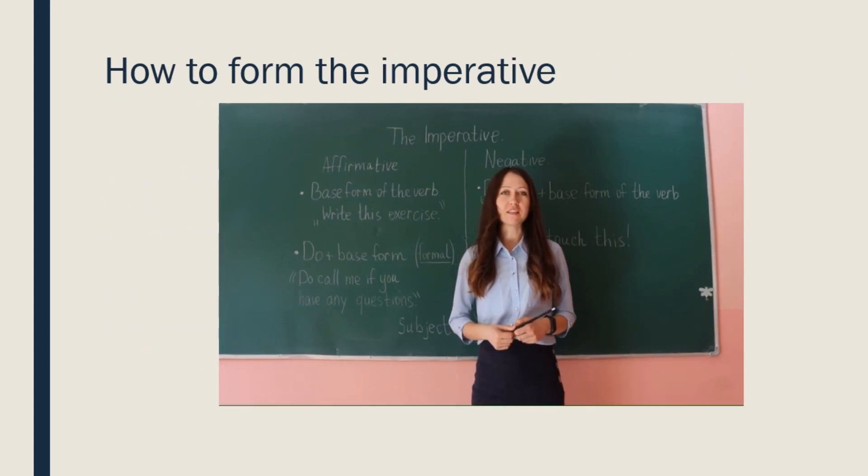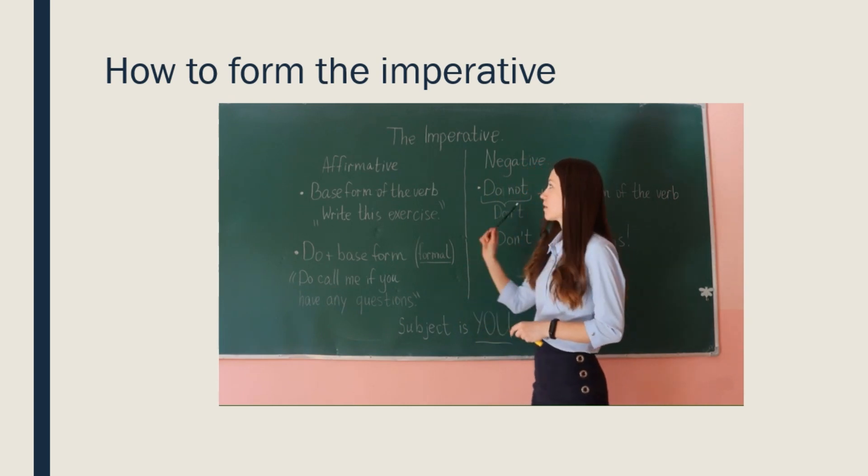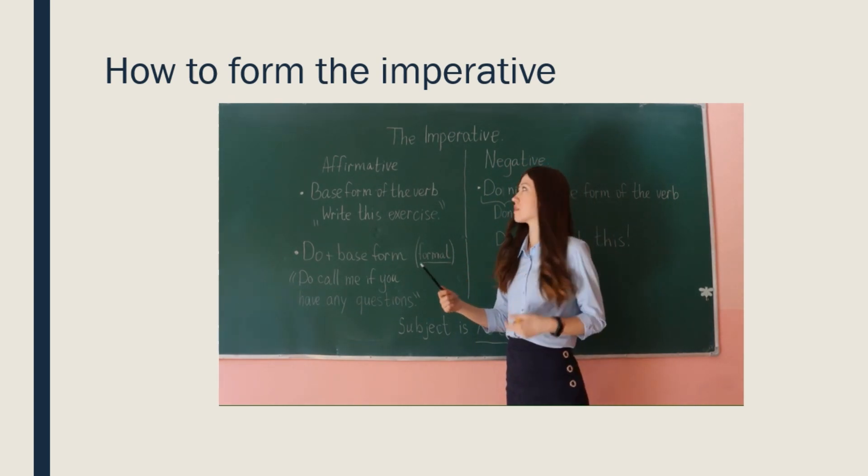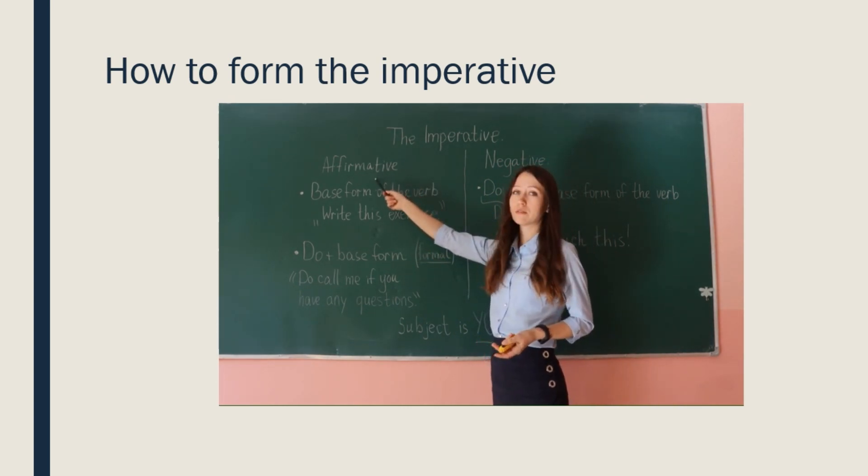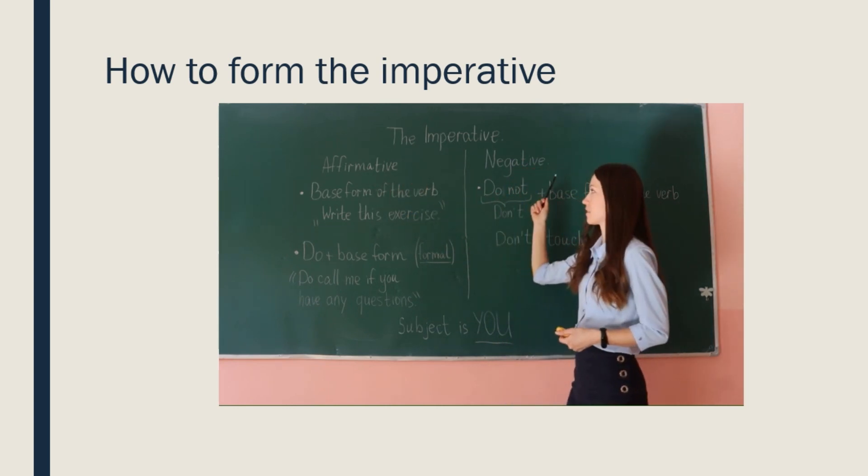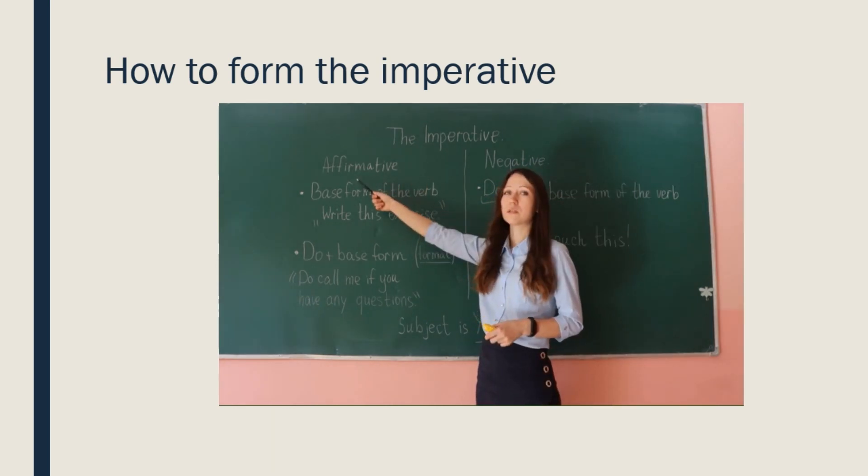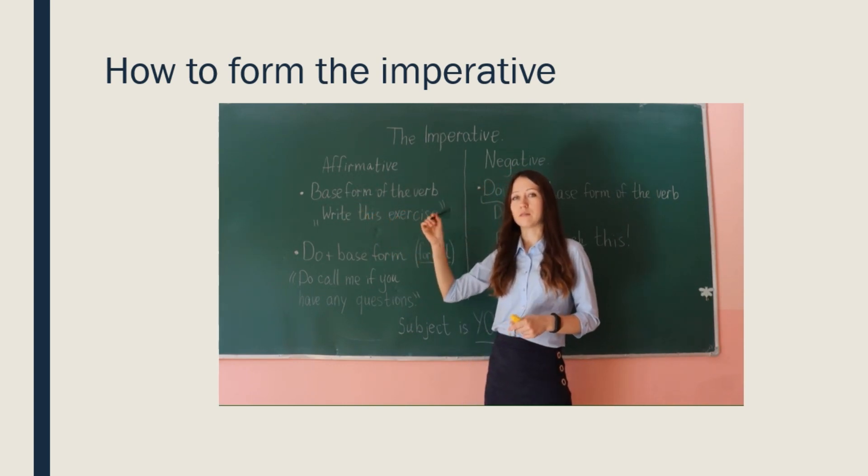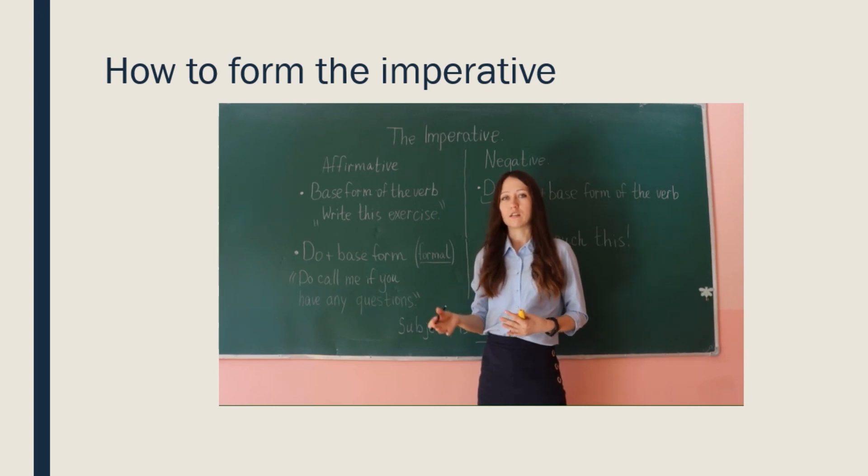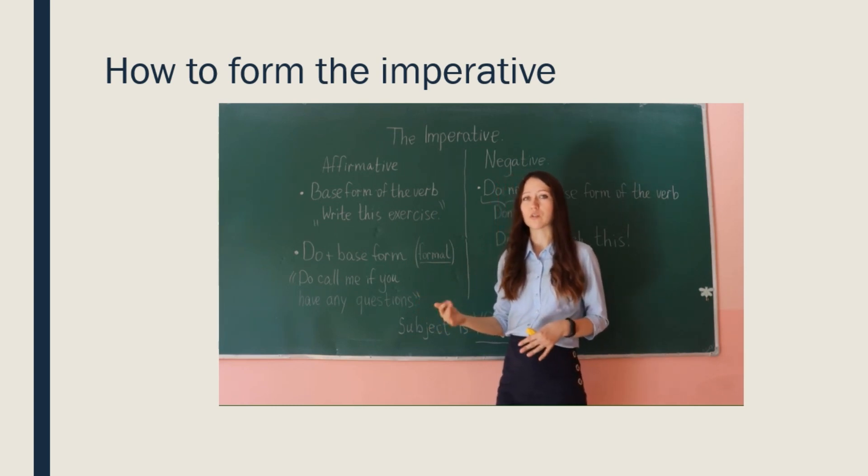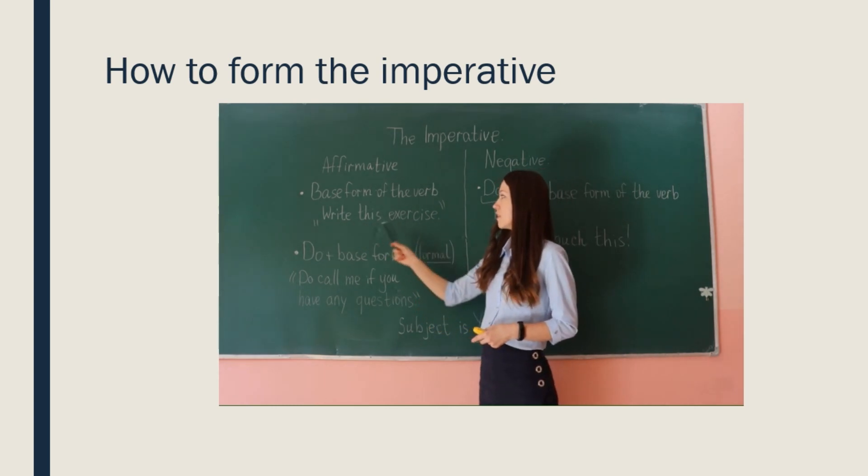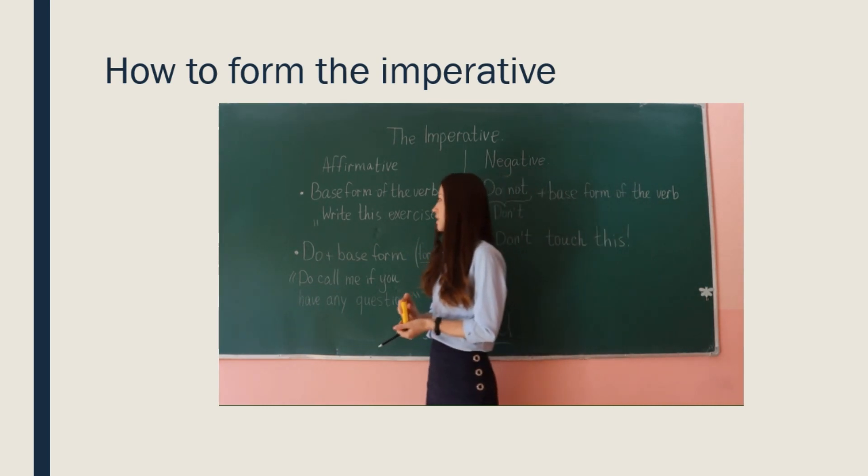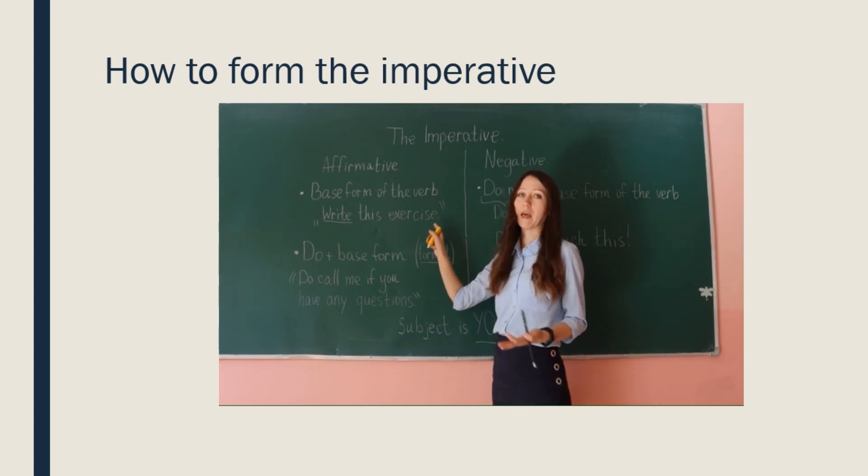Now, let's look how we form imperative sentence. Как образуется, как строится, какая структура. Есть у нас affirmative sentence that is positive and negative sentence. In affirmative we need just base form of the verb. And then you add some request or command instruction and so on. For example, write this exercise. So, write the base form of the verb and then command, order.